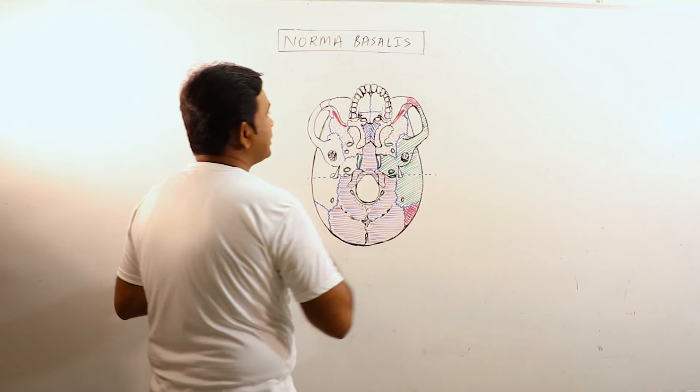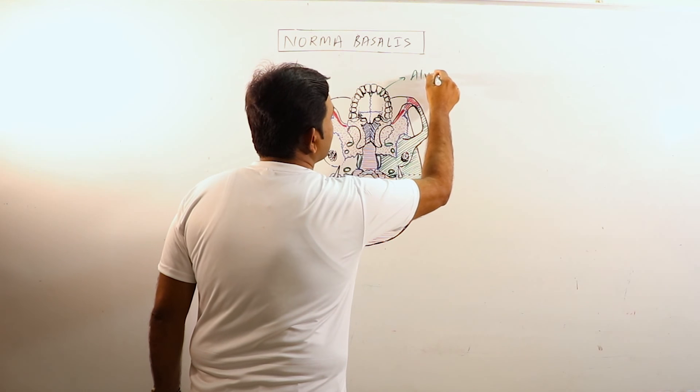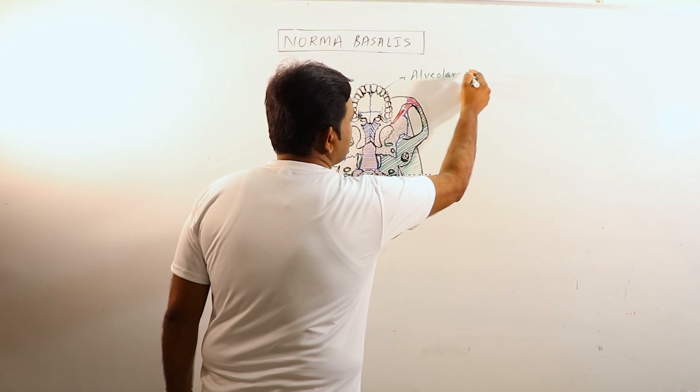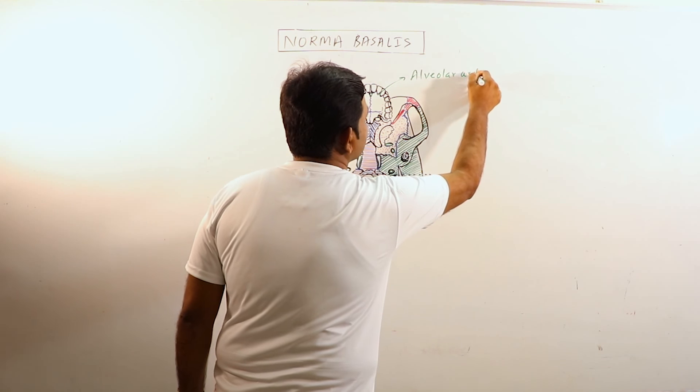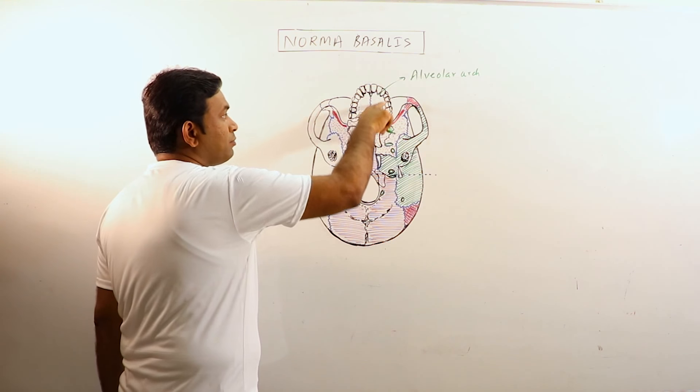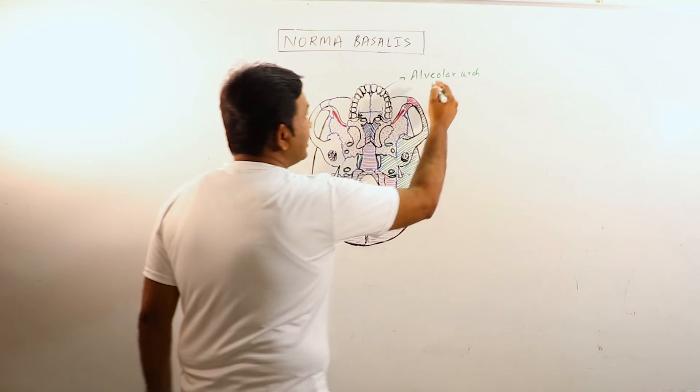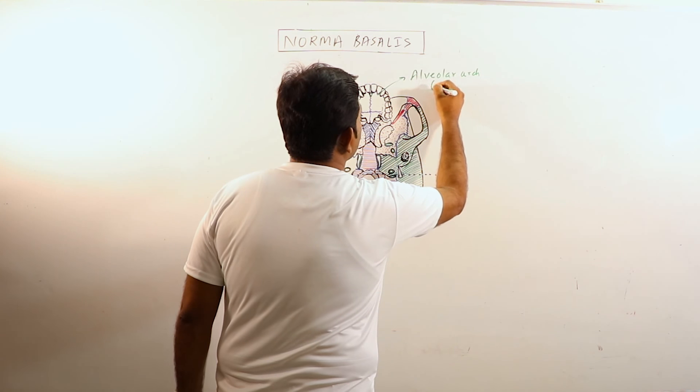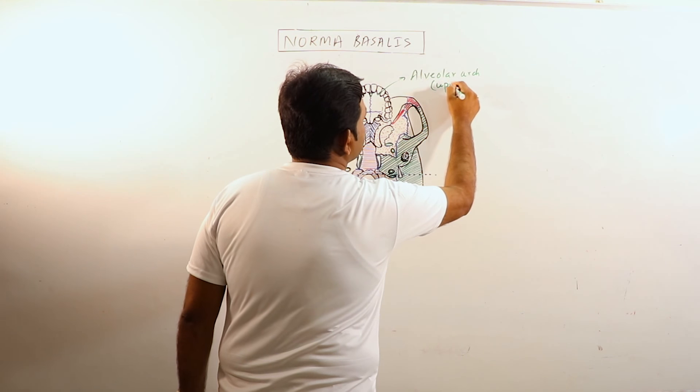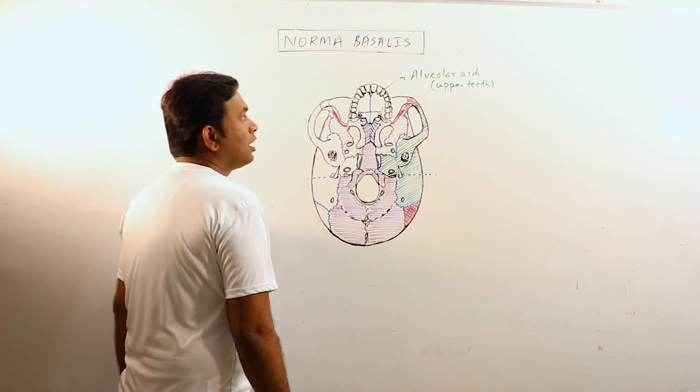Now as we can see these are basically the alveolar sockets in the alveolar arch. As we are observing it inferiorly, these are the upper teeth. So alveolar arch is basically in the maxillary bone and it embeds the upper teeth, having sockets for upper teeth.